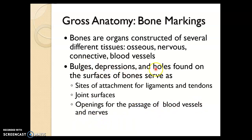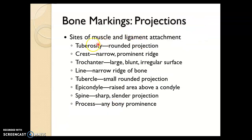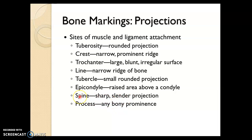So all these bulges, depressions, and holes are bone markings, which we're going to go over in this video. You should be able to match the bone marking to its definition. For example, a crest is a narrow or prominent ridge. A process is any prominence or bulge coming out of bone. If it's sharp and slender, call it a spine. We'll be using these words in upcoming chapters to name parts of bones.